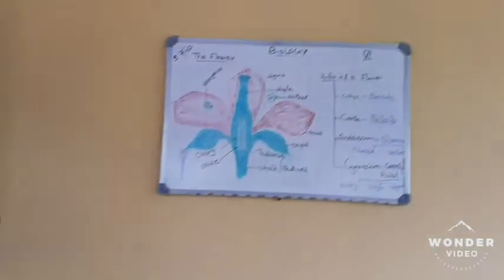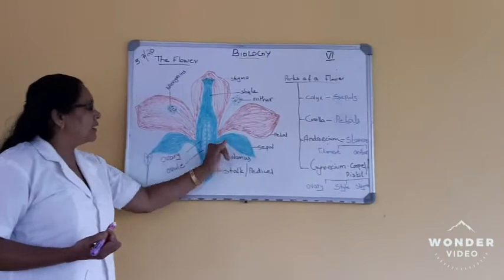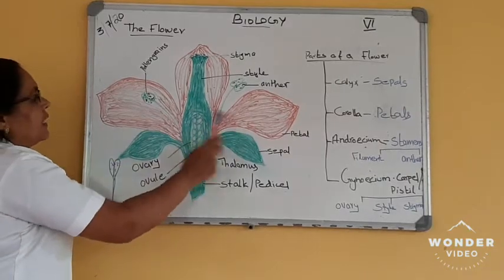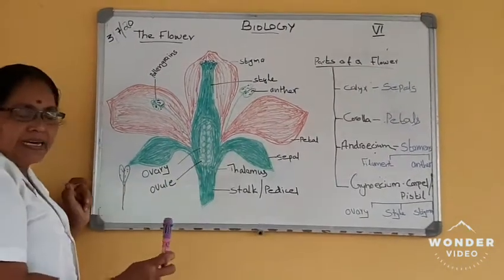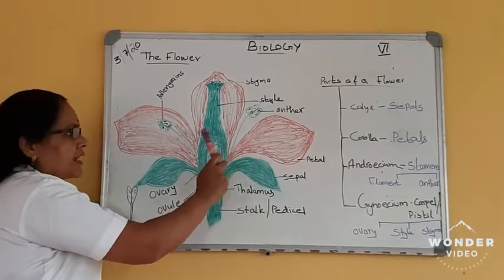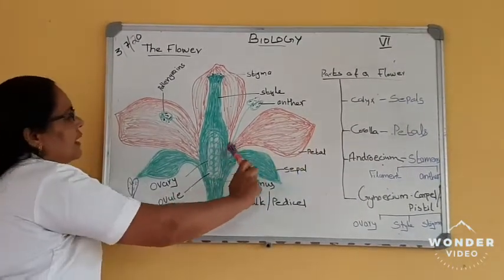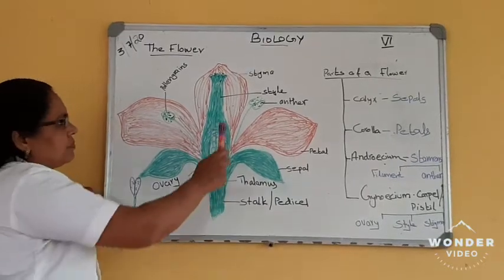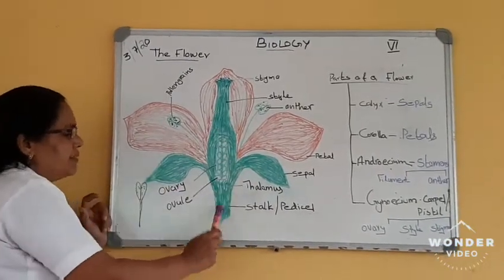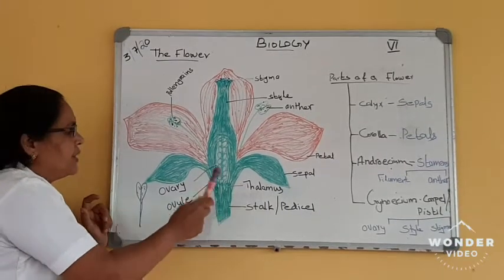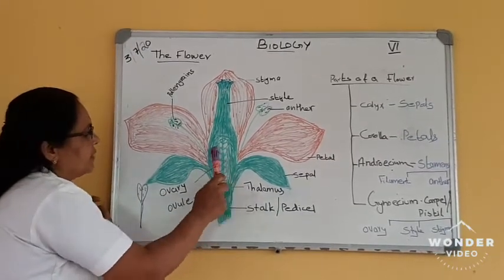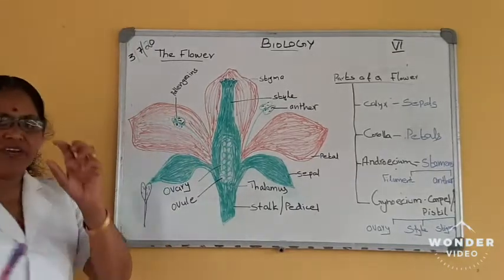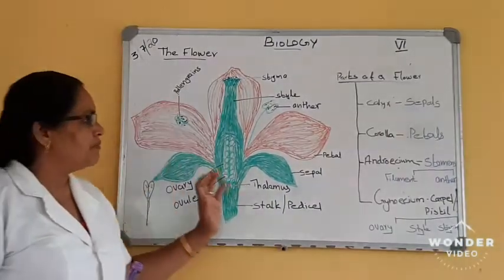Now look at the board. You can see the stalk, then the thalamus, then the sepals collectively called the calyx, then petals which are brightly colored to attract the insects — they are collectively called the corolla. Then the androecium: there are many stamens, stamens are collectively called androecium. And inner to that, the female part of the flower is the gynoecium. Gynoecium consists of a basal ovary, a long style, and at the tip the stigma.